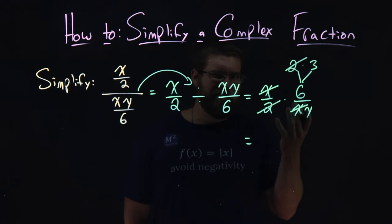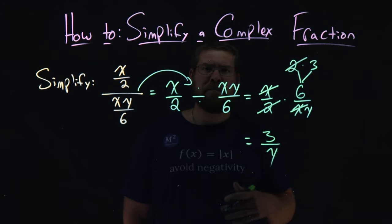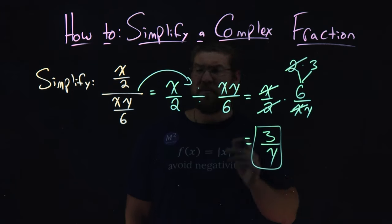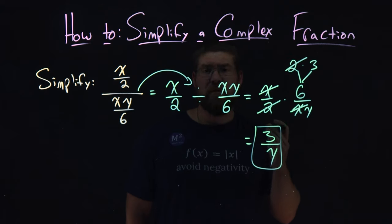They don't cancel each other out, so we have 3 over y. And there we have it. Our answer for this problem is 3 over y.